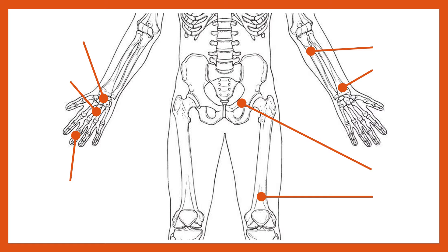Moving down the body to the hand, we have a large number of very small, roughly cube-shaped bones known as the carpals. Between the carpals and the fingers are the bones of the hand itself, called the metacarpals, which extend out from the carpals. Then down towards the fingers we have the phalanges.